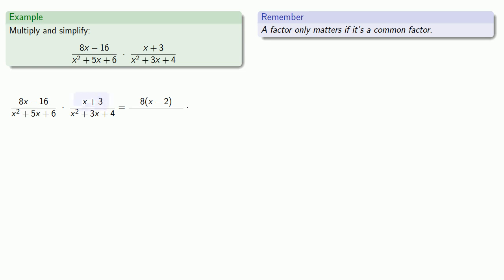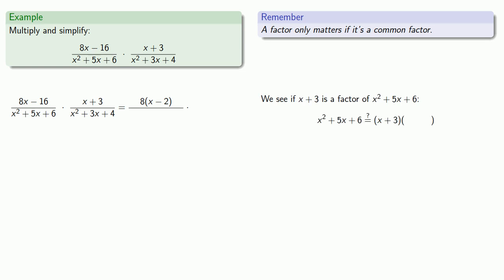Next, we might see if x plus 3 is a factor of either x squared plus 5x plus 6 or x squared plus 3x plus 4. Can we write x squared plus 5x plus 6 as x plus 3 times something? That something has to have an x — because the first terms multiply out to x squared — and has to have a plus 2, since the constant terms must multiply to 6. We still have to check it out by multiplying, and we confirm that x squared plus 5x plus 6 does factor as x plus 3 times x plus 2.